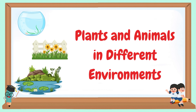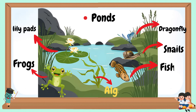Plants and animals in different environments. Ponds: lily pads, frogs, algae, fish, snails, and dragonfly.